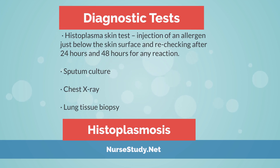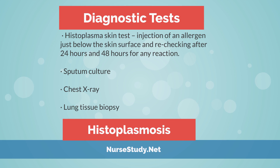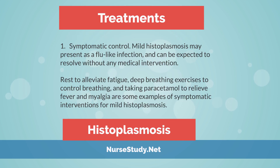Diagnostic Tests for Histoplasmosis: Histoplasma skin test — an injection of an allergen just below the skin surface, rechecked after 24 and 48 hours for any reaction. Additional tests include sputum culture, chest X-ray, and lung tissue biopsy.